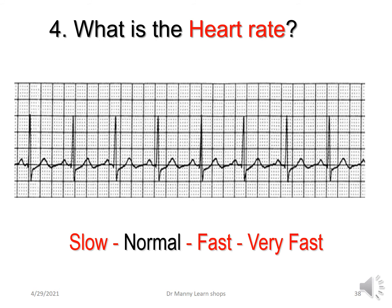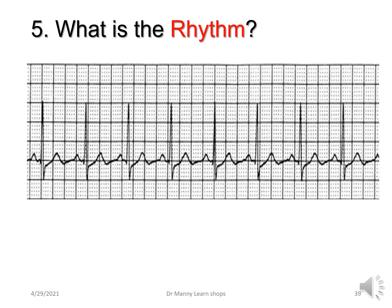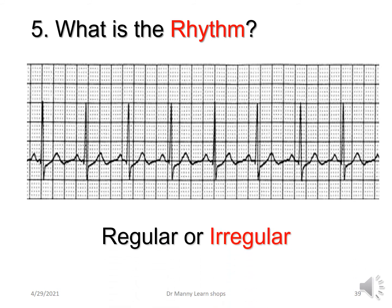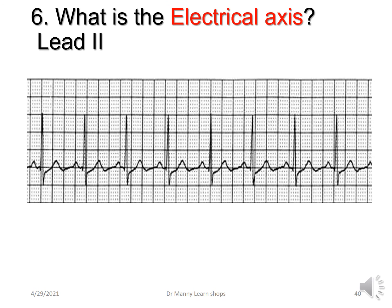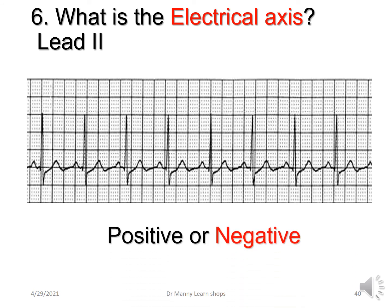If the heart rate is normal, you're not going to worry about it. If it's slow, fast, or very fast, you might be concerned. What's the rhythm? We're saying: is it regular or irregular? If it's regular, you might not be that concerned; if it's irregular, you might be concerned. What's the electrical axis in lead two? We're not determining the actual degrees — we're saying lead two is normally positive in an adult because they are left ventricular dominant, so it's typically positive, not negative. If it's negative, you might be concerned, or you might realise the leads are on the wrong way.